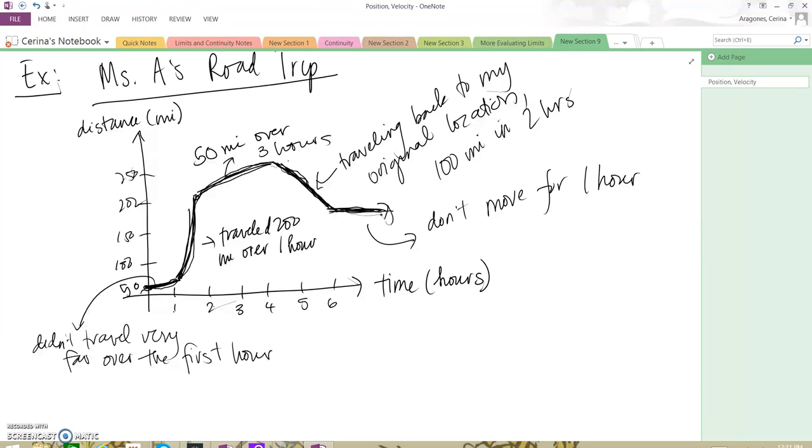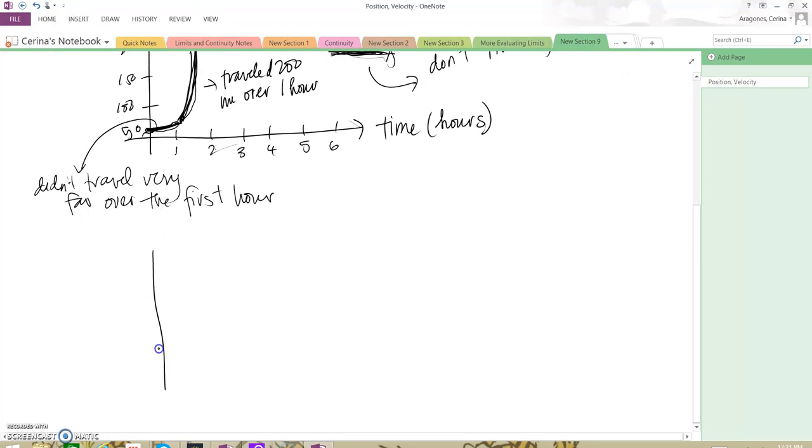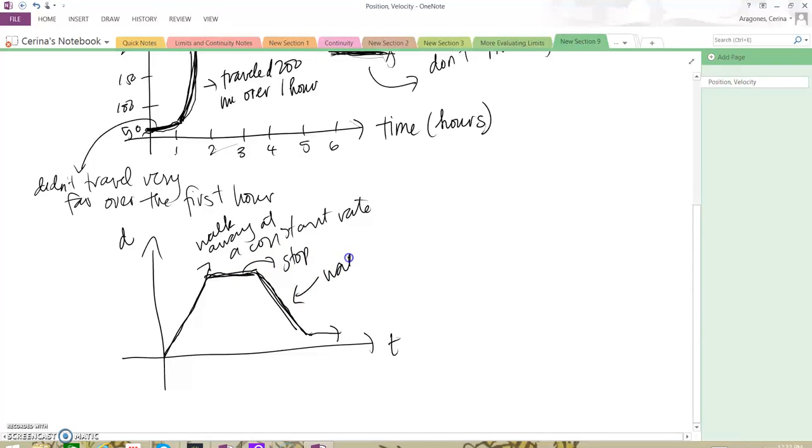This is exactly what we did with our slope walk. When you had to graph a slope walk that looked like this, you knew you had to walk away from the motion detector at a constant rate because it's linear. This is our time, this is our distance. Then over here, you knew you had to stop in front of the motion detector. And then this part, you knew you had to walk back again at a constant rate. You can intuitively understand what's going on with the motion detector when we did our slope walks.